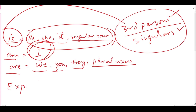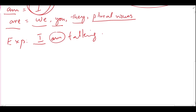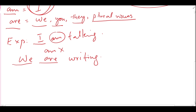For example, we say 'I am talking' — according to the subject, we use the helping verb am. We can also say 'We are writing' — according to the subject we, we use are. We cannot say 'we am' or 'we is' — those are wrong. This is subject-verb agreement: whatever the subject is, we use the corresponding helping verb.